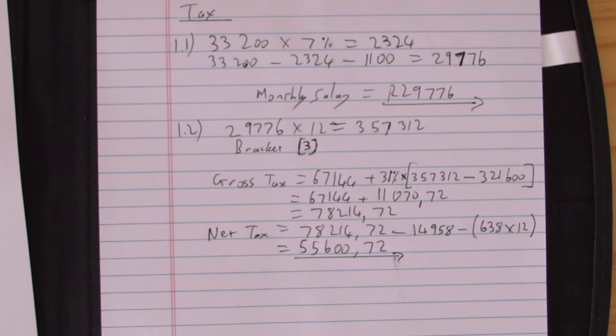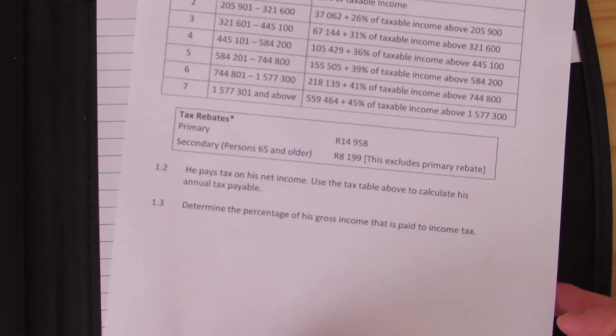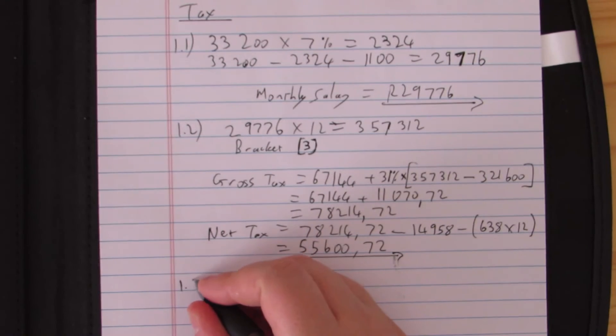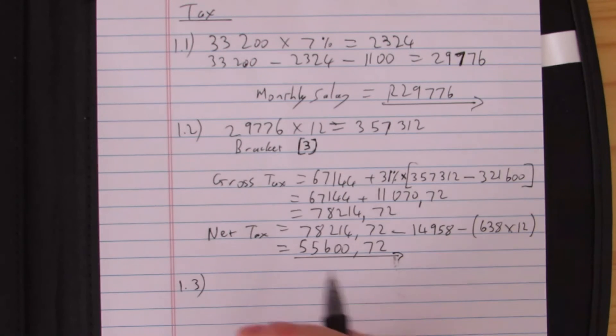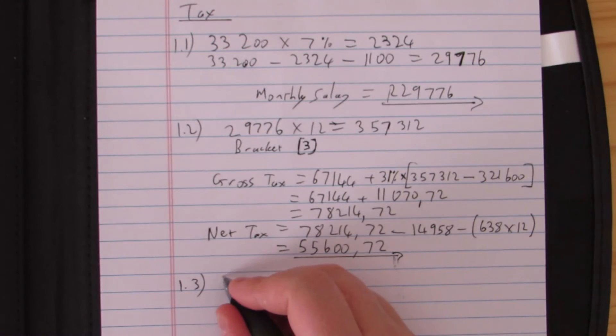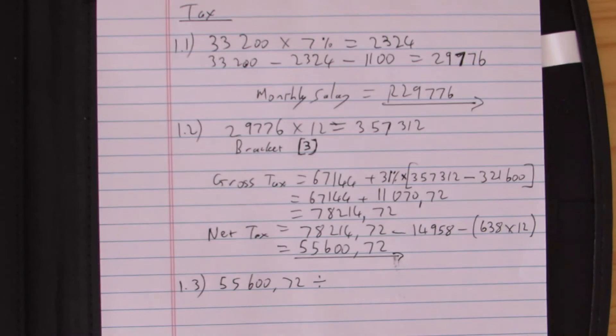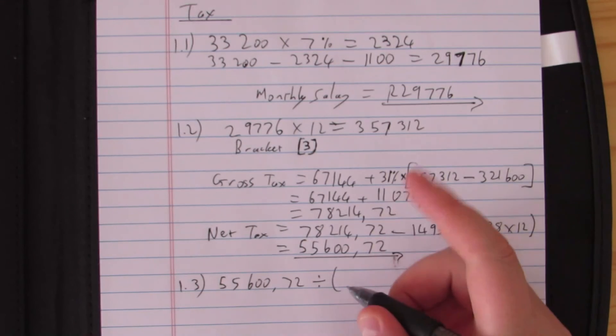Now my last question: determine the percentage of his gross income which is paid to income tax. We're looking at the percentage of gross income that is paid. Gross income means everything that they earn. What we are looking at then is the tax that was paid, 55,602.72. And now we're looking for gross income.